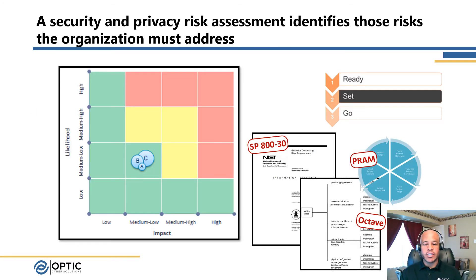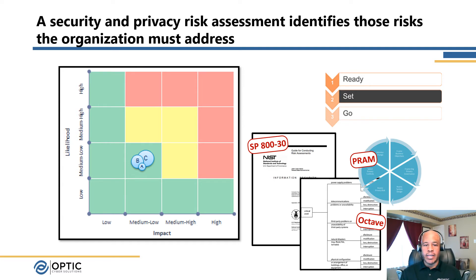Once the organization has progressed from the Ready stage, the next stage is the Set stage. The key component here is the risk assessment that needs to be performed to really understand and identify those areas that need to be addressed by the organization based on their target state profile — really identifying the gaps and understanding what those risks look like. The NIST framework doesn't prescribe any specific type of risk assessment; you have some examples like SP 800-30 and the PRAM. The key piece is really understanding those risks, which will need to be addressed as you move forward to building out that privacy program.